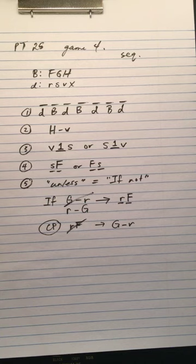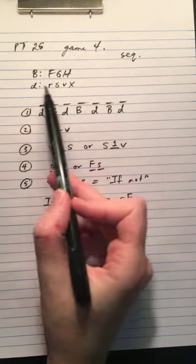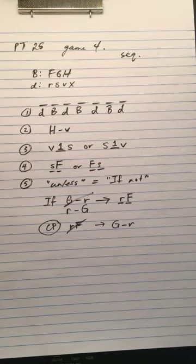I'm going to start with game four from Prep Test 25 and you can see I've already done the work for the diagram for the setup. I just forgot to press record, so I'll just go over it now. So these are our players here. We have three ballads and four dance tunes.